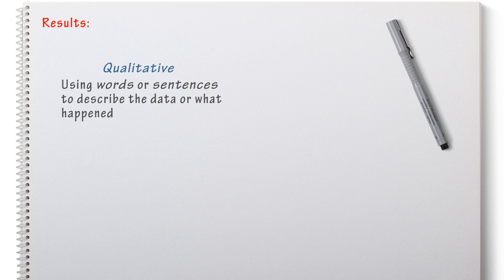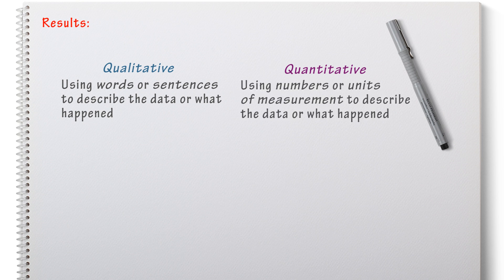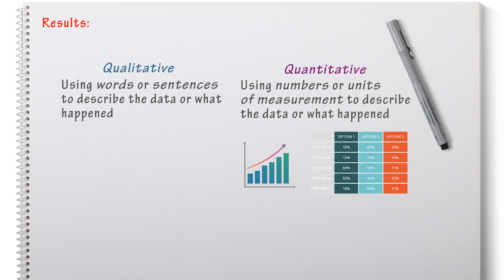There are a couple of ways that you can represent your results in your results section. You can have qualitative data which is when you're using words to describe what happened like the colour of something, how something looks or sounds or feels. You can also have quantitative data which is using numbers and units of measurement like seconds, kilograms, centimeters and you can then use that data to create graphs and tables. So qualitative data is describing what happened using words and sentences and quantitative data is representing your results as numbers.